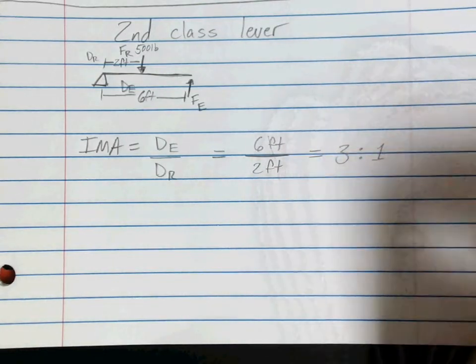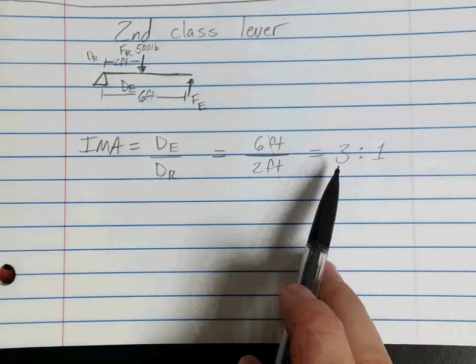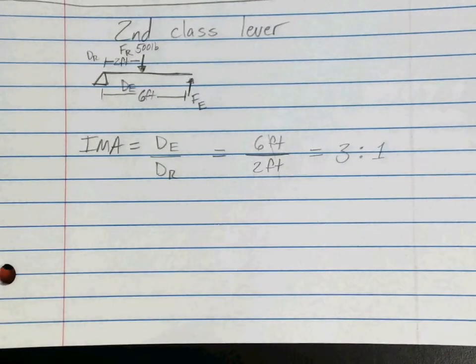So we're in a system where it's three to one, three times easier than it would be, and three times the distance.